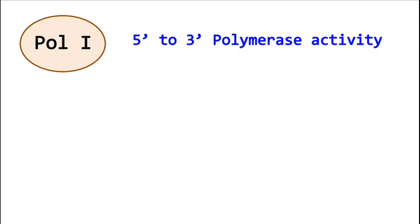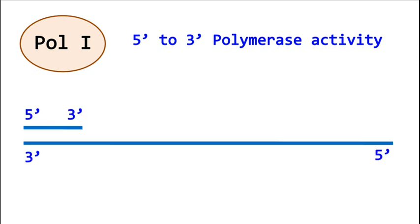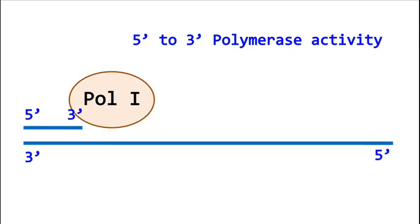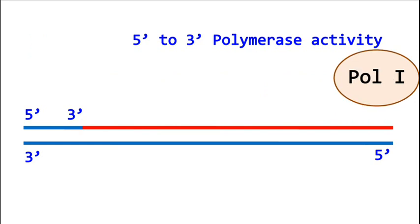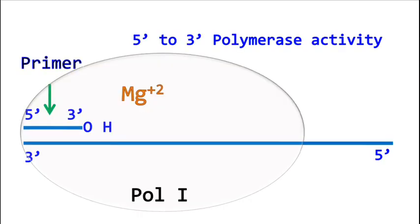In five prime to three prime DNA polymerization activity, the polymerase adds complementary dNTPs on the template DNA. For this process, the polymerase requires a primer that can be extended in five prime to three prime direction. This process occurs in presence of magnesium ions.